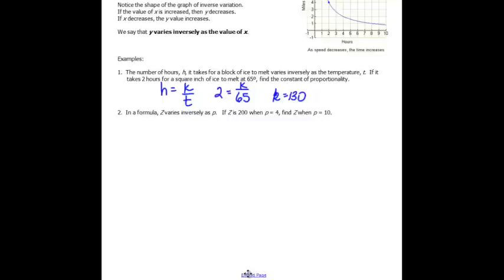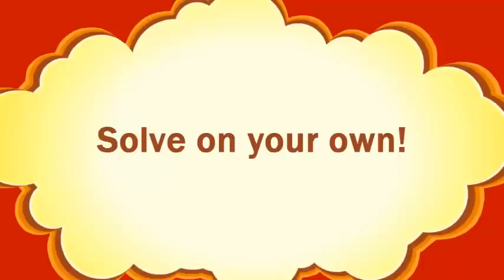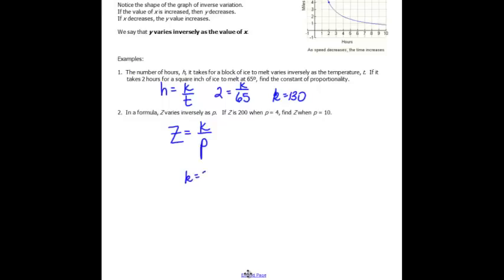In number two, z varies inversely as p. I'm just going to go ahead and set up my equation. If z is 200 when p is 4, find z when p is 10. So this is just like the examples we did with direct, only we're using a different type of equation. Go ahead and solve that and see what you get. I got for k, 800, which means when I plugged that back in, I got z = 80.